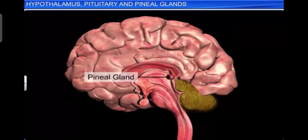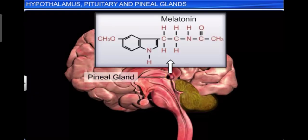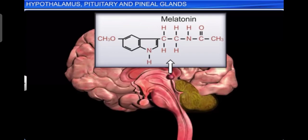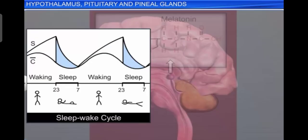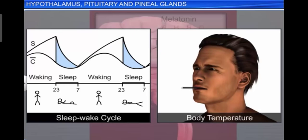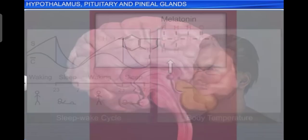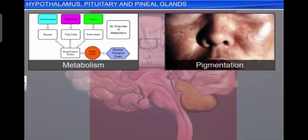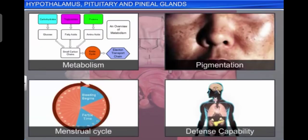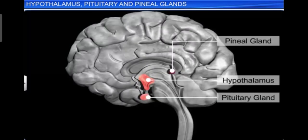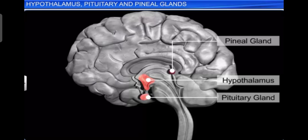The pineal gland is located on the dorsal side of the forebrain. It secretes a hormone called melatonin. Melatonin plays a very important role in the regulation of the 24-hour rhythm of our body — for example, it helps in maintaining the normal rhythm of the sleep-wake cycle, body temperature, and pigmentation, and also influences menstrual cycles and our defensive recovery. These are the three endocrine structures of the brain: the hypothalamus, pituitary, and pineal gland.